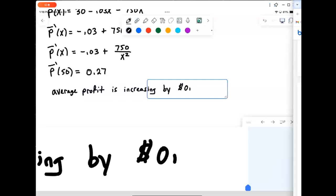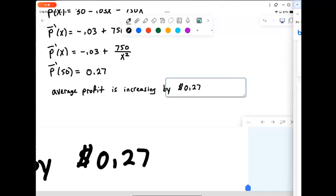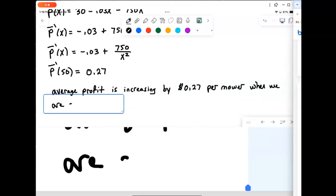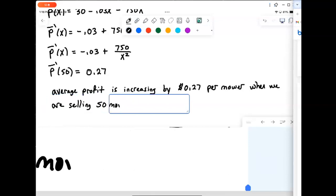That's going to be 0.27 per mower sold, for each mower we sell about 50.